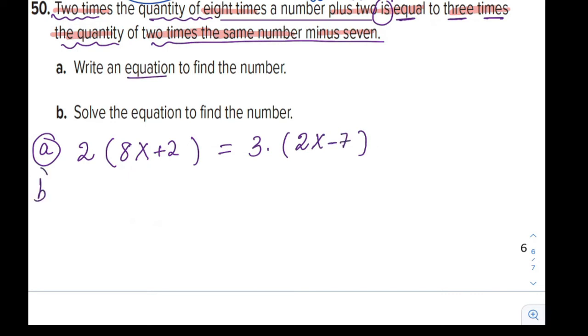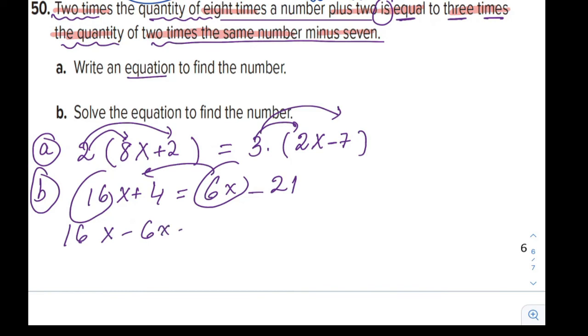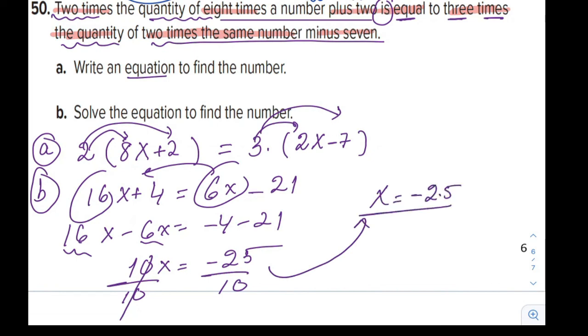And in part B we need to solve this equation by applying all the rules. Let's see. Distribute. 2 times 8x is 16x. 2 times 2 is 4. And we will distribute here. 3 times 2x is 6x. And 3 times negative 7 is negative 21. Combining like terms. So 16x minus 6x is negative 4 minus 21. 16x minus 6 is 10x. Negative 4 minus 21 is negative 25. We can divide both sides by 10. And this leads to x is negative 2.5. So the number we are looking for is negative 2.5. Great.